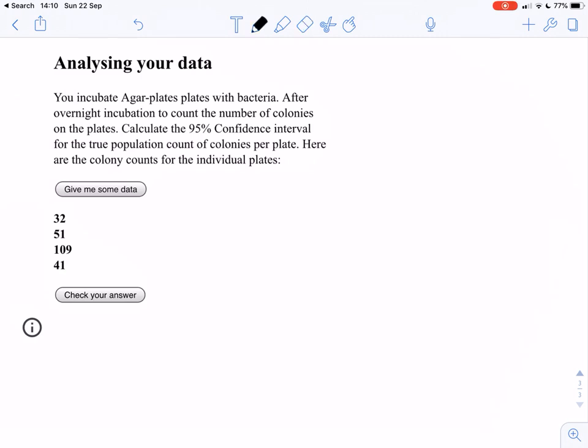So here we have our four plates with the bacterial colonies and we can use the Poisson equation to find out what our true population mean is if we did this experiment a lot of times, so if we had basically an infinite amount of plates. And what we want to do is calculate this 95% confidence interval.